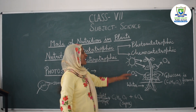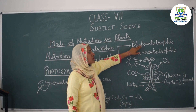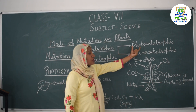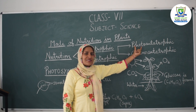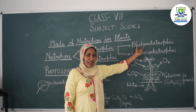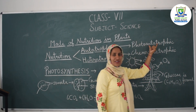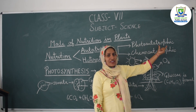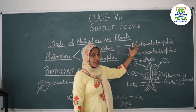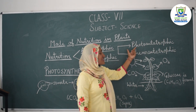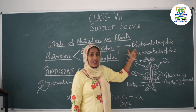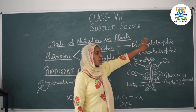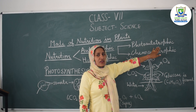Photo autotrophic nutrition: the word 'photo' means sunlight, 'auto' means self, and 'trophic' means to get nourishment. The definition is where organisms use sunlight for making their food.